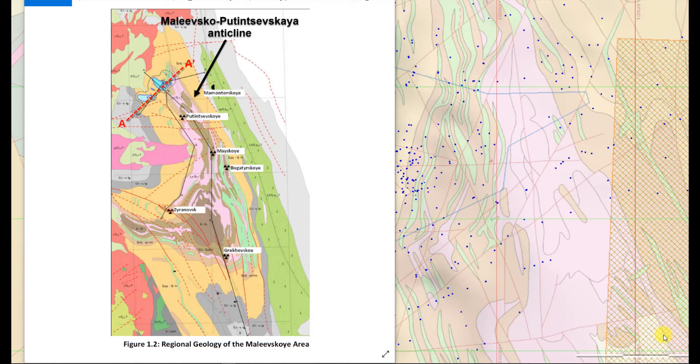The Maliv VMS deposit is located at the northern end of this large non-cylindrical dome called the Maliv Puttsevskaya Anticline. It's located here and it's plunging towards the northwest. The main northerly plunge of this dome is right here and plunges towards the north-northwest, so there is a bit of a divergence in plunge here due to non-cylindrical folding.